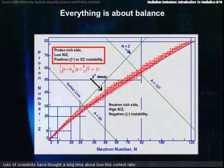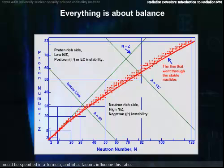Lots of scientists have thought a long time about how this correct ratio could be specified in a formula and what factors influence this ratio. As implied by the line here on our Z versus N graph, it would be great if we could describe a line that went through the stable nuclides. Scientists have actually done a good job of this, and they've found, among other things, that having an odd or even number of nucleons affects stability.